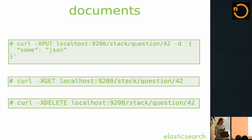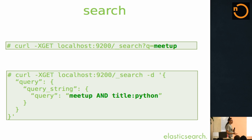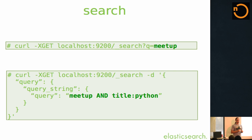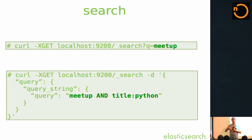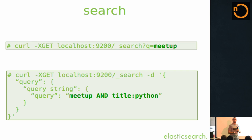Nothing groundbreaking there. So you have data — what do you do with it? The first thing you do with a product called Elasticsearch is actually search. There is a convenient shortcut: if you just do underscore search with Q equals meetup, it will do a search for meetup. It will search across all of your indices, all of your types, all of your documents, all of their fields. This is a good way to make sure it's working.